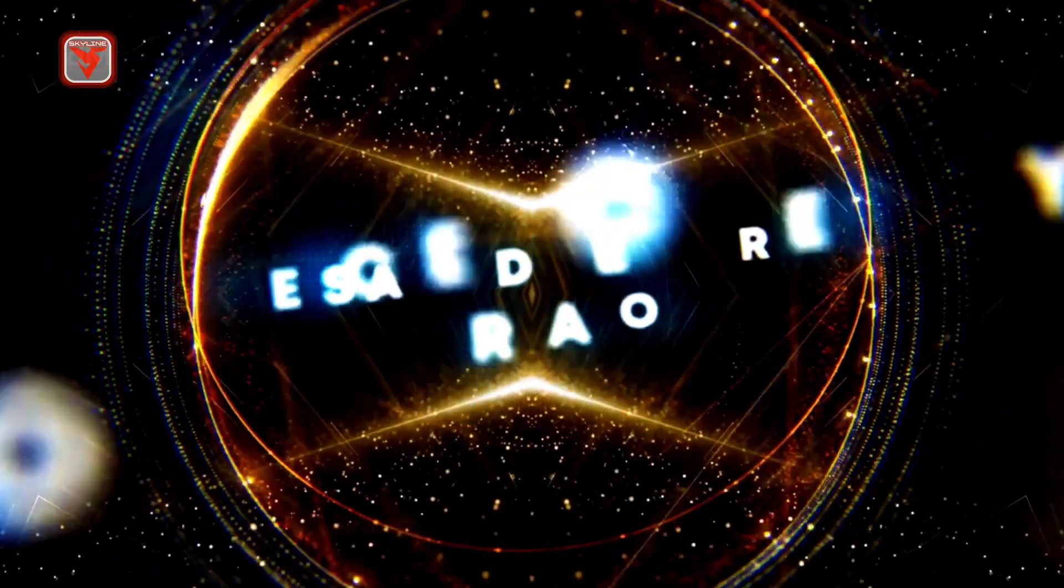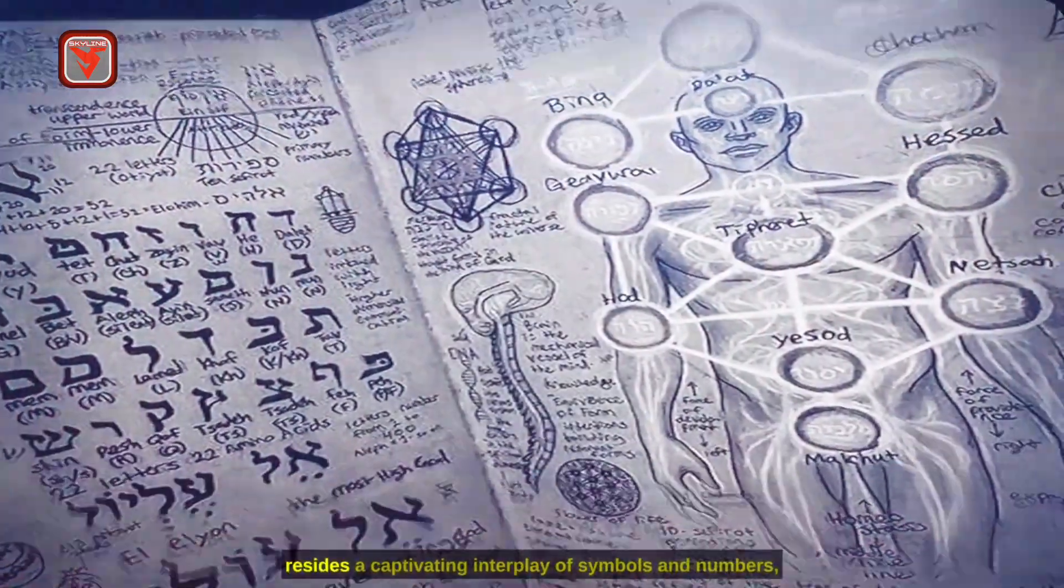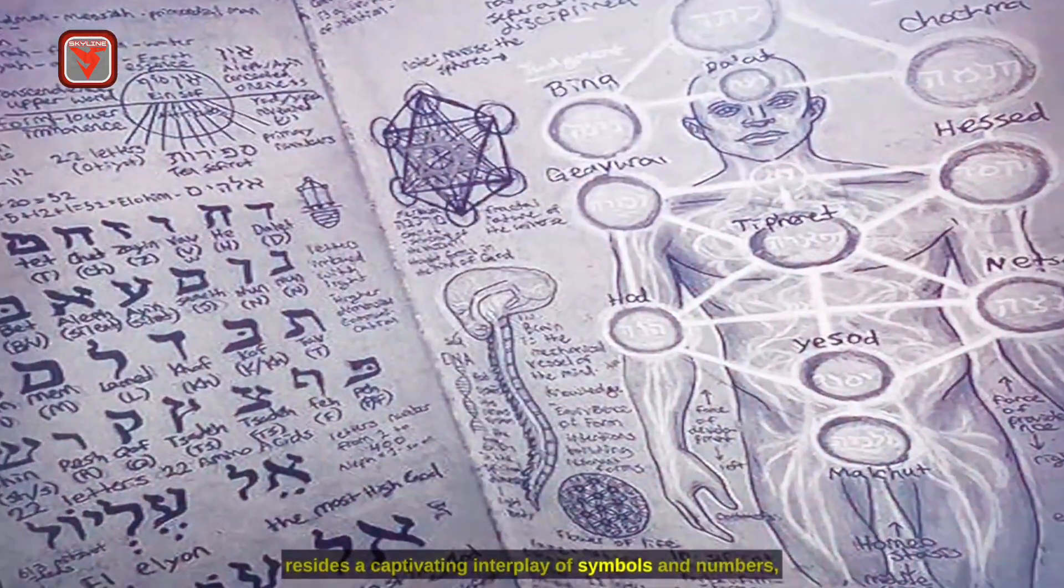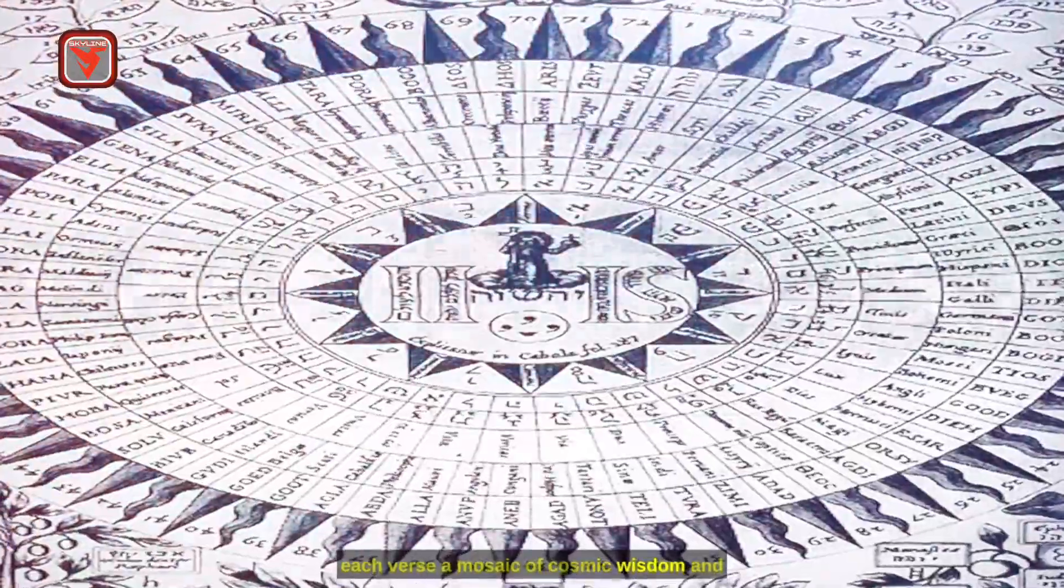The Sacred Geometry of Creation. At the heart of the Book of Formation resides a captivating interplay of symbols and numbers. Each verse a mosaic of cosmic wisdom and the foundational elements of existence.